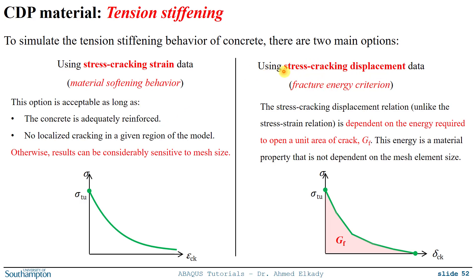By defining stress-displacement instead of stress-strain, the cracking displacement here — this stress-displacement relation — is dependent on the energy required to open a unit area of the crack. On this curve, the first point represents the ultimate tensile strength of the concrete, and there is another point representing the ultimate cracking displacement. The area under this curve is what we call G_f, the energy required to open a unit area of the crack. This G_f parameter is a material property and is not dependent on mesh size, so using this option the mesh size will not affect the results.